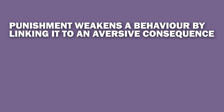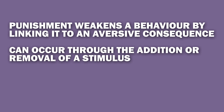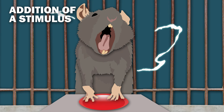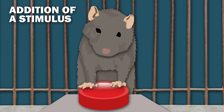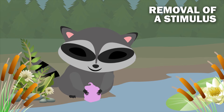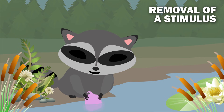Punishment weakens a behavior by linking it to an aversive consequence. Just like reinforcement, it can occur through the addition or removal of a stimulus. For example, if a rat receives an electric shock when it pushes a button, it will avoid that button. Or, if a raccoon decides to wash his cotton candy before eating it, only to watch it dissolve before its very eyes, that is punishment through the removal of a positive stimulus.